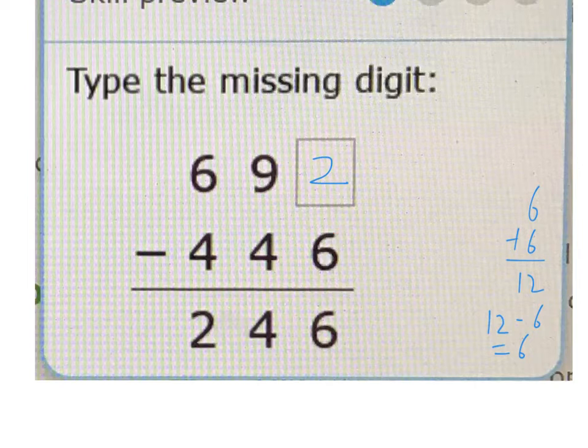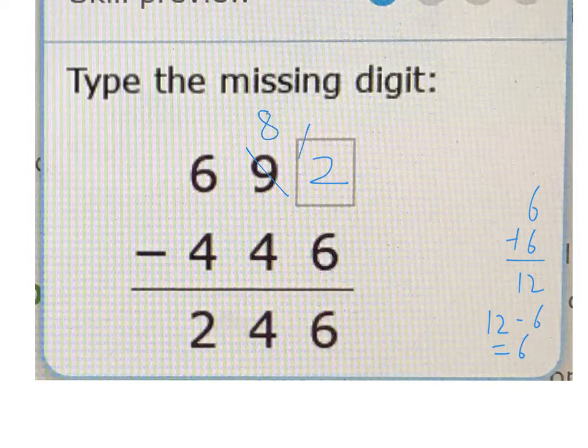So then twelve minus six equals six. Let's check the rest of the question. Makes sense: eight or eighty minus four or forty - eight minus four is four, six minus four is two. Boom! So the only digit that's missing is that two.